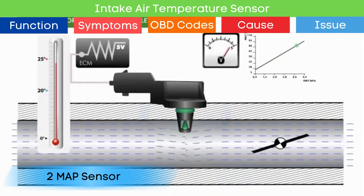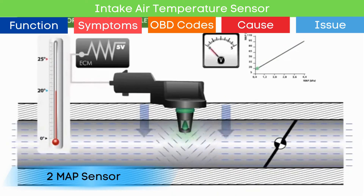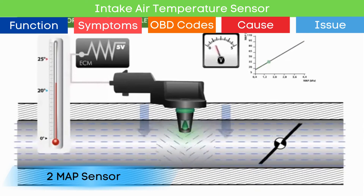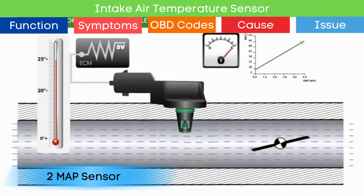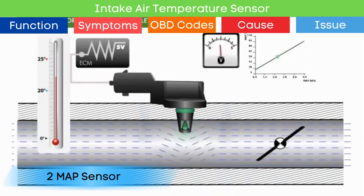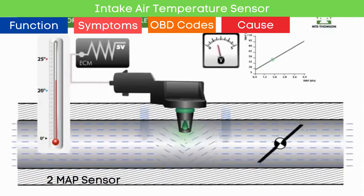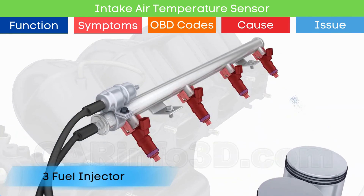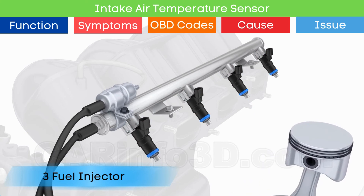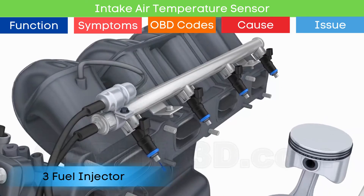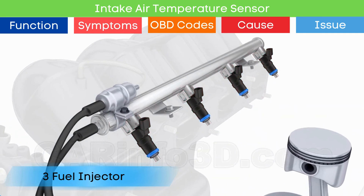Second: a faulty manifold absolute pressure sensor. The MAP sensor measures the pressure of air entering the engine manifold. This data is essential for calculating the air-fuel ratio. If the sensor malfunctions, it can cause incorrect readings, resulting in imbalances in the air-fuel mixture. Third: faulty fuel injectors. Dirty or clogged fuel injectors can disrupt the fuel spray pattern, causing an improper air-fuel mixture, which can lead to similar symptoms to those caused by a bad IAT sensor.